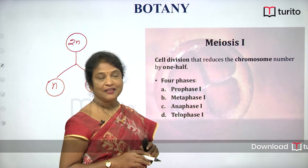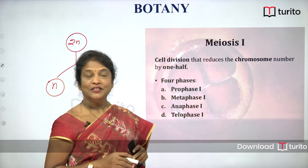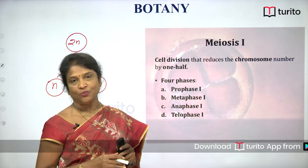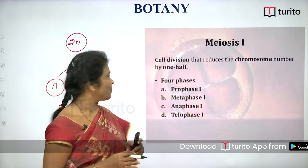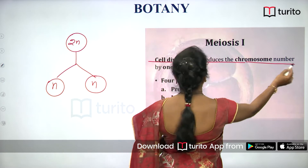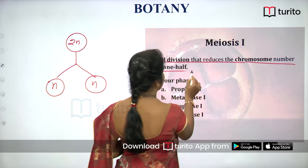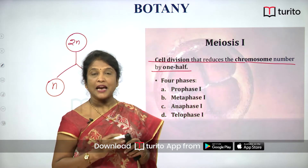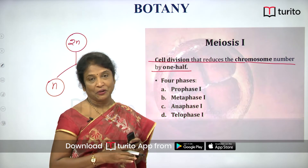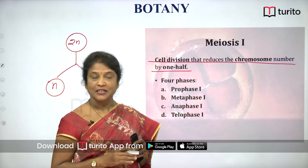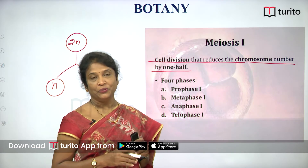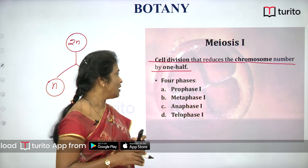Meiosis one is considered the true reductional division, as we confirmed in the previous class. It is the cell division that reduces the chromosome number by exactly one half in the daughter nuclei. That is why it is called the true reductional division.